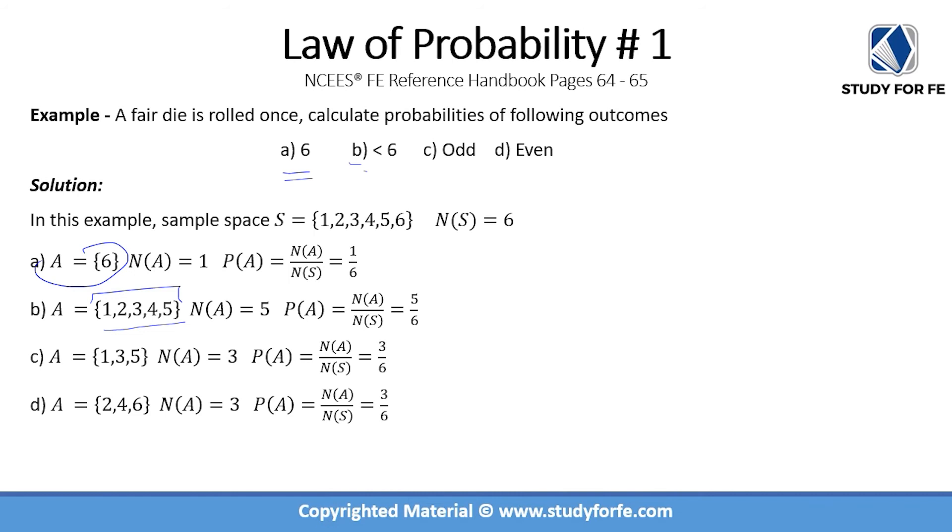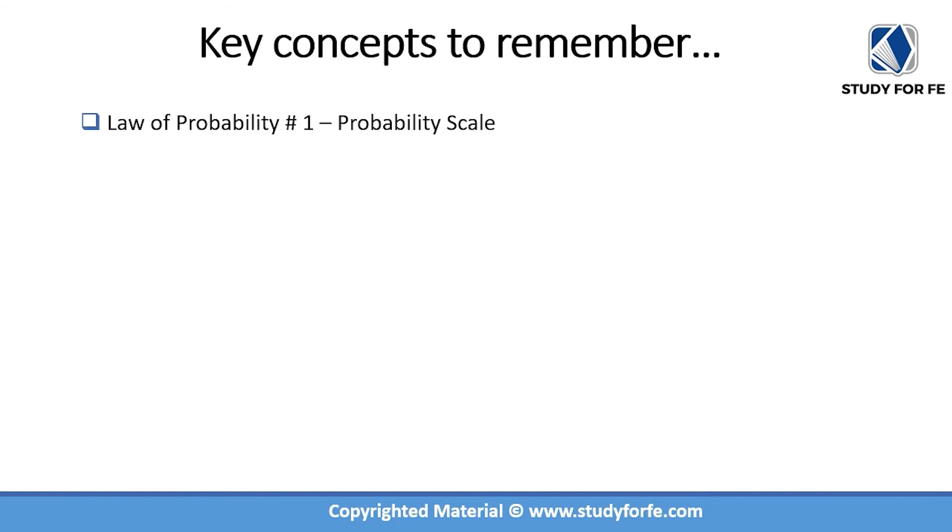In this lecture we learned about Law of Probability Number One, which introduces the concept of probability scale. It mathematically defines probability as a ratio of frequencies. We discussed the concept of sample space and we also learned that the lowest probability of any event is zero and the highest probability is one. We also did a couple of practice problems in order to apply these concepts.